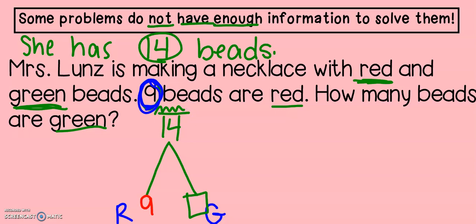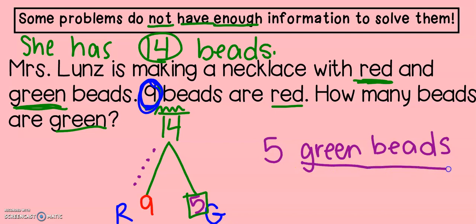Now I can either count up or count down to find my missing number. I'm going to count up for this problem. Nine, 10, 11, 12, 13, 14. That is one, two, three, four, five. So she has nine red beads and five green beads. Now normally I would just write beads. But since we have two different color beads, I decided to write green beads so I can be more specific.